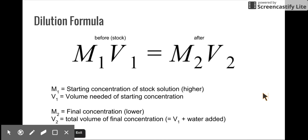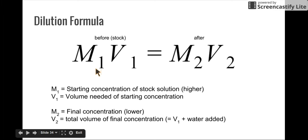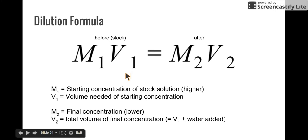So this formula — you need to know it and you need to know how it works. This is the dilution formula. In this formula you see M1 times V1 equals M2 times V2. M1 times V1 represents your stock solution — it's the molarity and the volume that you need to use of your stock solution. That's the starting concentration of the stock solution and the volume you need to use in order to make a dilution.